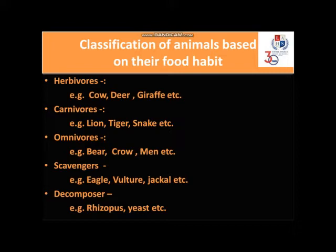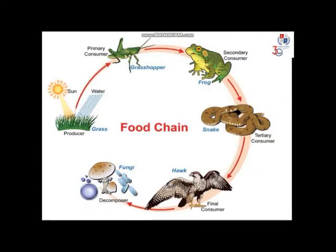Now children, examples are given on your screen — please note down and learn them. The last topic of this chapter is the Food Chain. The process by which plants supply food to all living organisms is called a food chain. In this example: grass is eaten by the grasshopper, the grasshopper is eaten by the frog, the frog is eaten by the snake, the snake is eaten by the hawk, and finally the hawk is decomposed by decomposers. All food chains always start with a producer, because producers can make their own food by the process of photosynthesis and supply food to all living organisms. In this way, organisms directly or indirectly depend on plants for their food.